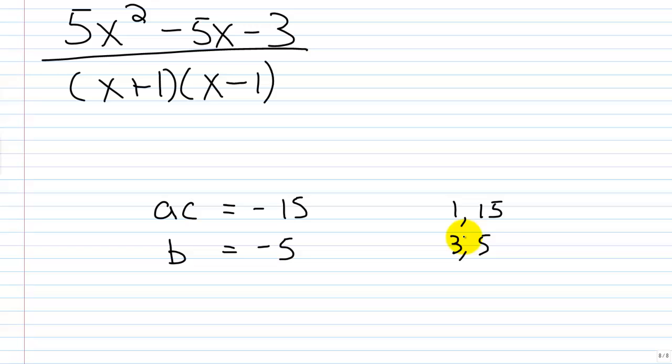You're not going to play with the signs here and make a sum of negative 5 and a product of negative 15. There's just no way to do it. So this right here, this 5x squared minus 5x minus 3, that is a prime polynomial.